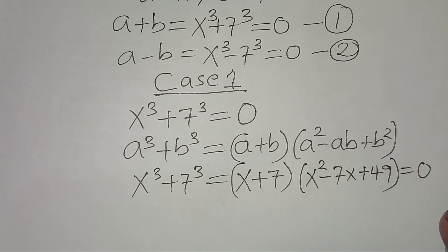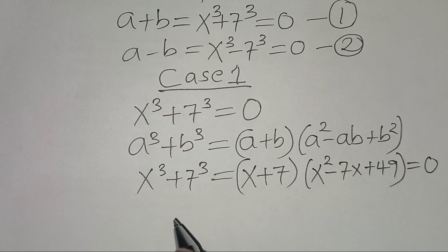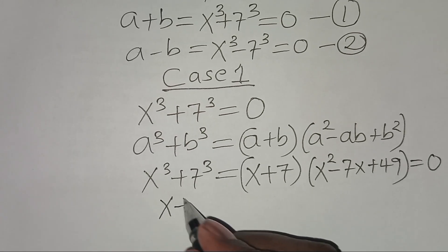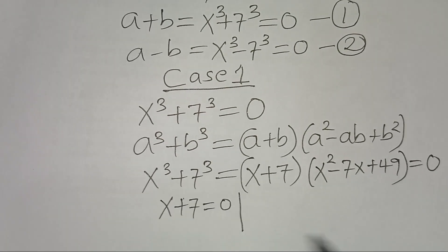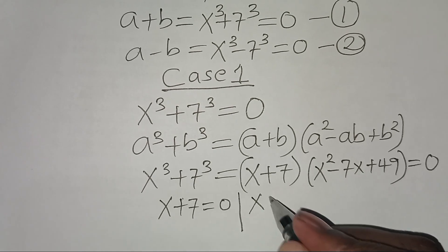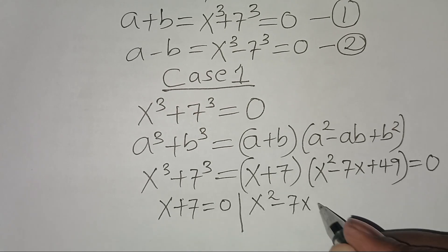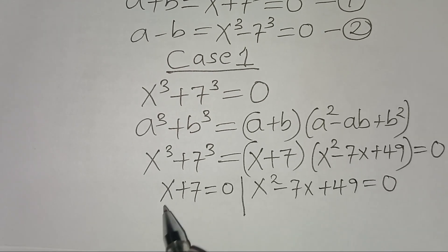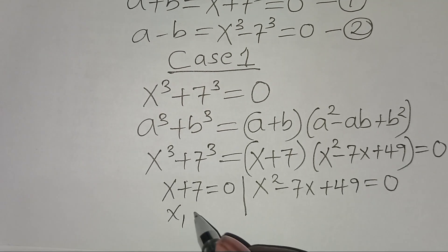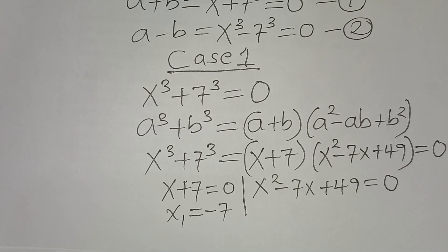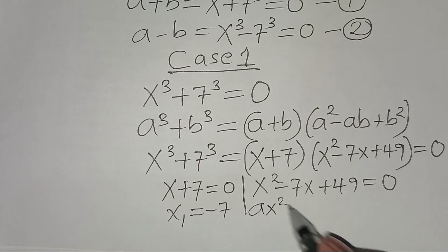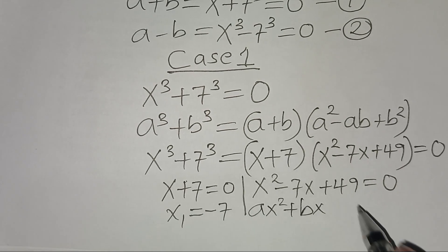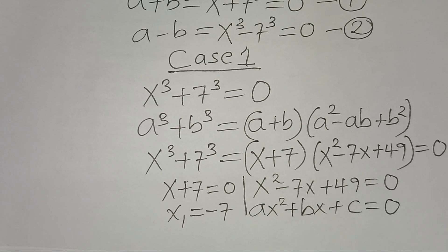We now have two parts. The first part is x plus 7 equals 0, giving x₁ = -7. The second part is x² - 7x + 49 = 0, which is a quadratic equation of the form ax² + bx + c = 0. Let's solve this quadratic equation.